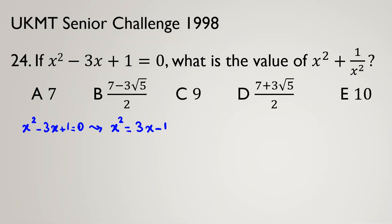Let's apply it here. The problem wants x squared plus 1 over x squared. If I replace x squared with 3x minus 1, the expression becomes 3x minus 1 plus 1 over (3x minus 1).